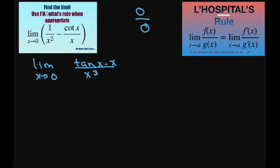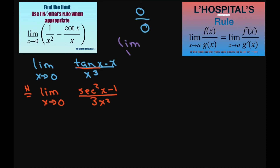Therefore we're going to use L'Hôpital's rule and differentiate the numerator and denominator. For the numerator I get secant squared of x minus 1, and for the denominator I get 3x squared. Since this still has the same indeterminate form — the limit as x approaches 0 of secant squared of x equals 1, so 1 minus 1 is 0, and the denominator is also 0 — we still have an indeterminate form.